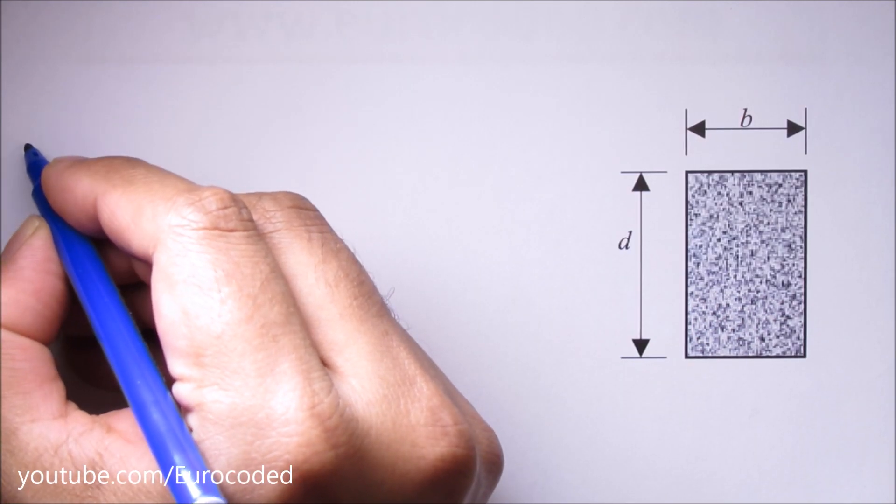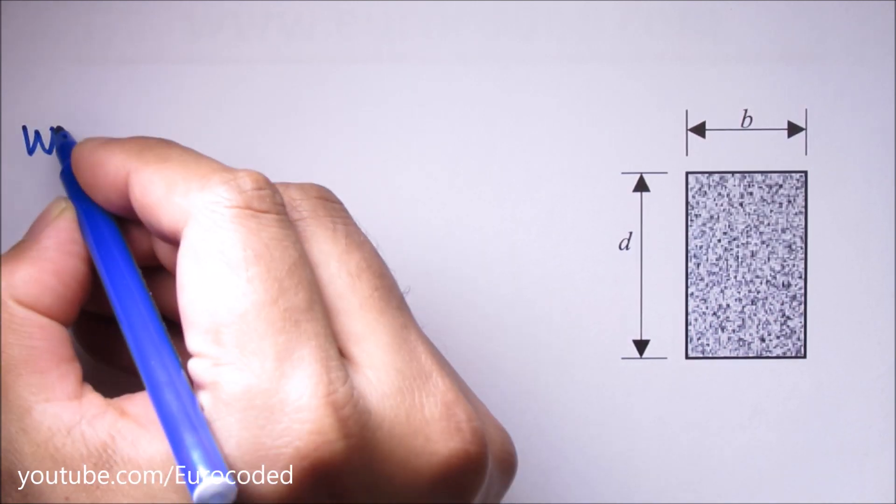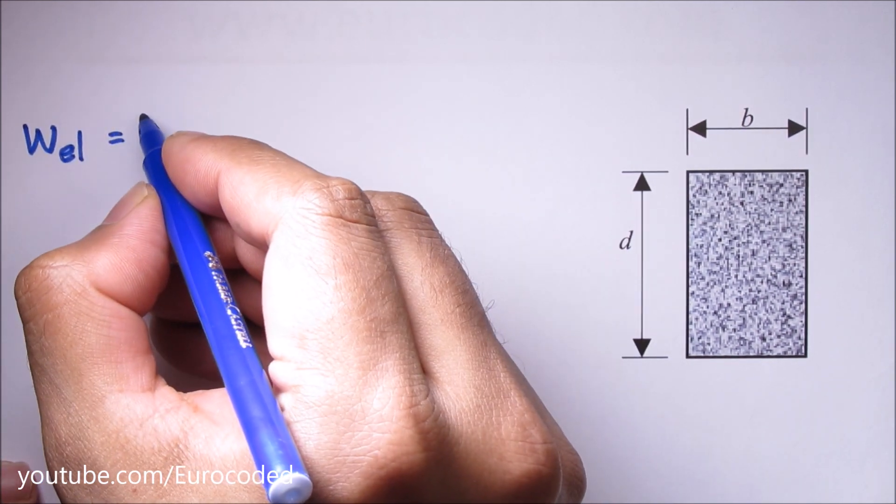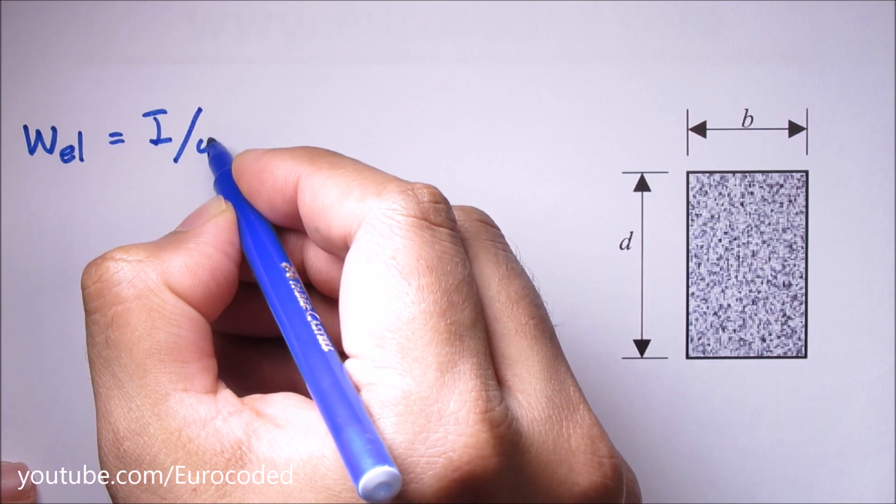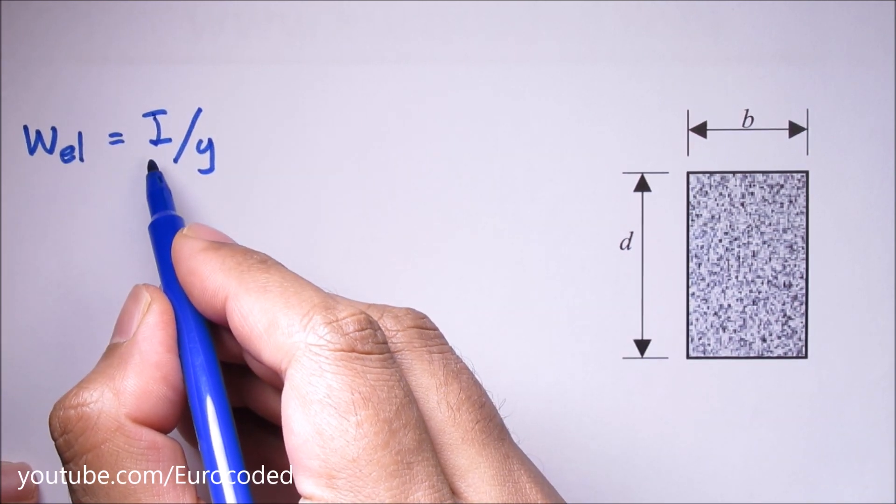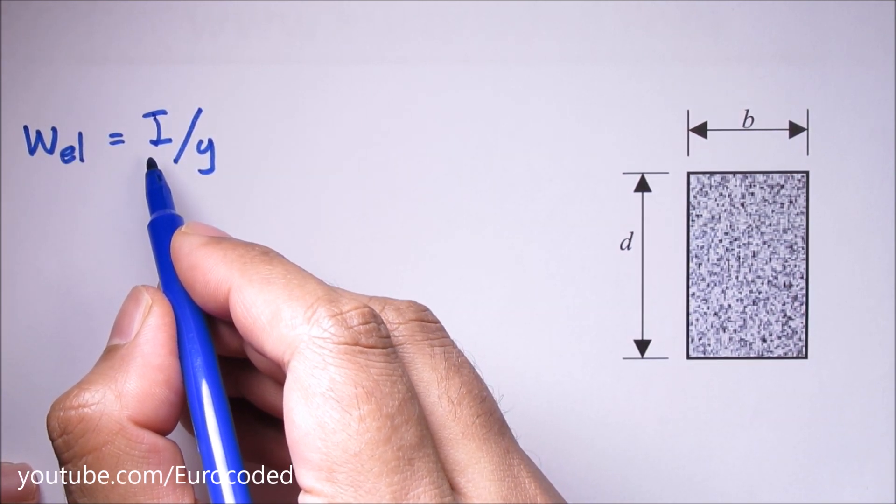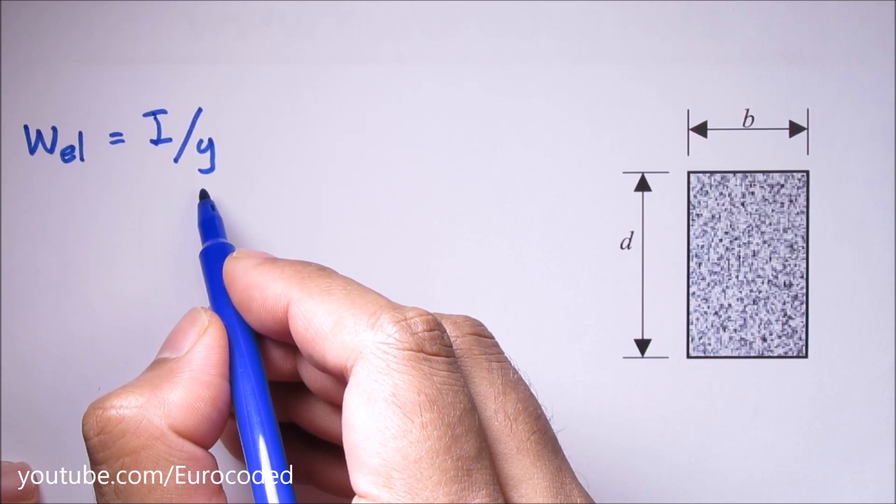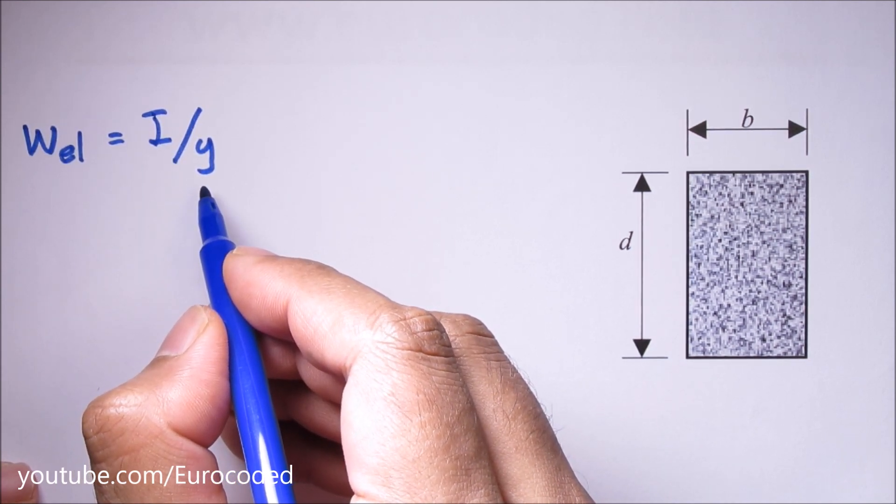The elastic section modulus W_EL is defined as I over Y, where I is the second moment of area or moment of inertia, and Y is the distance from the neutral axis to any given fiber.